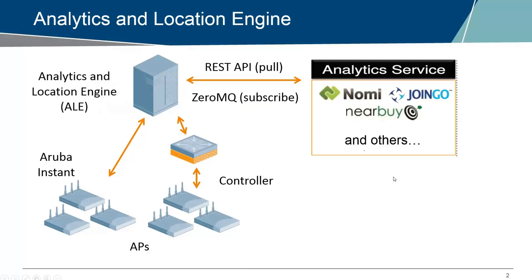ALE is the acronym for Analytics and Location Engine. It is a box you put in your network that can fetch data from your access points — both Aruba Instant Access Points and controller-based access points. When a wireless client is probing, you can hear it on the access point at a certain RSSI level. Based on that, you know clients are at a specific location at a specific time, and if you hear them at multiple access points, you can do a triangulation to estimate where that client is. This is very useful for larger places like retail, hospitals, and large public venues.